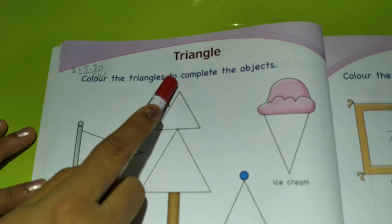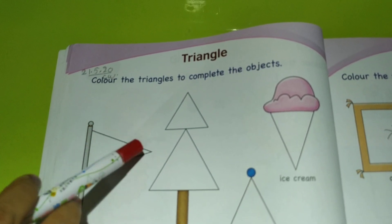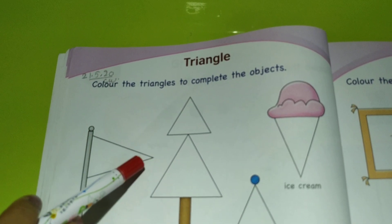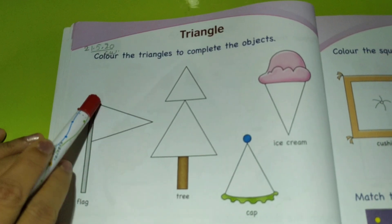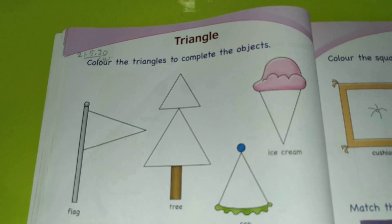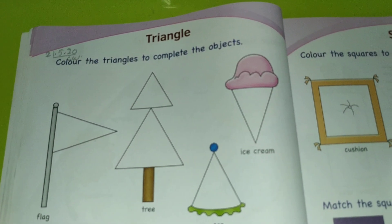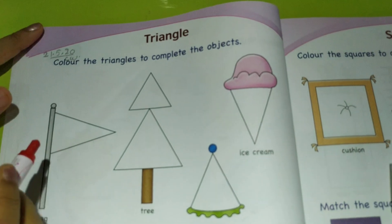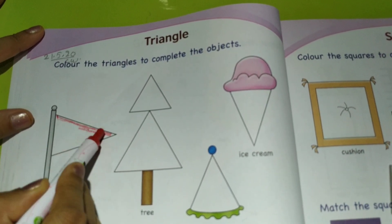Color the triangles to complete the object. So here, as I told you, triangle will be of different sizes and it has got three corners. Can you see the flag? Now with any color that you choose, you can take and color it. So I have taken red and we will color this flag nicely so that the color doesn't go out of the line.